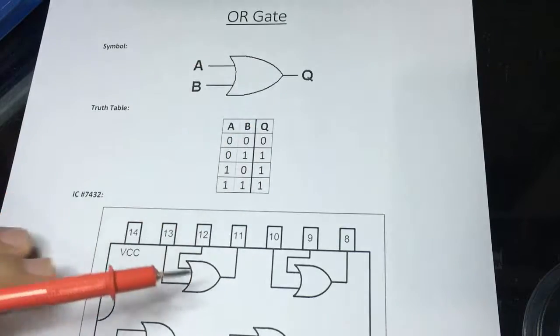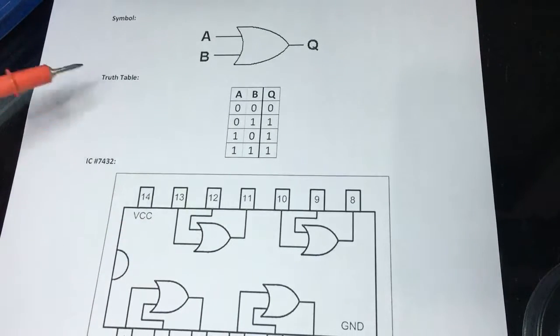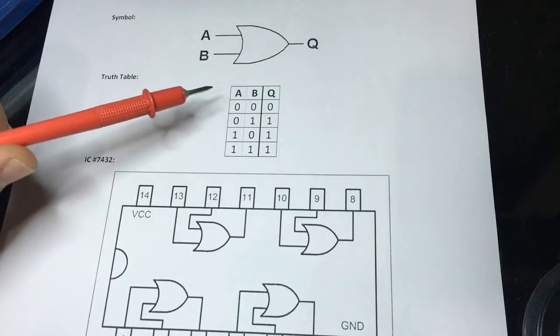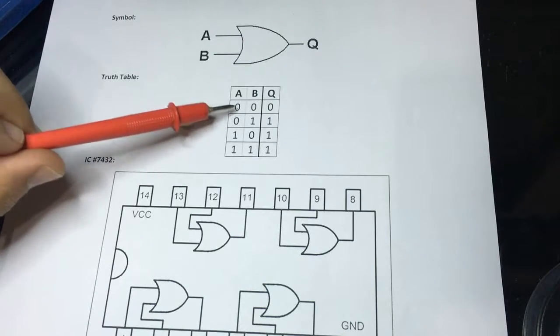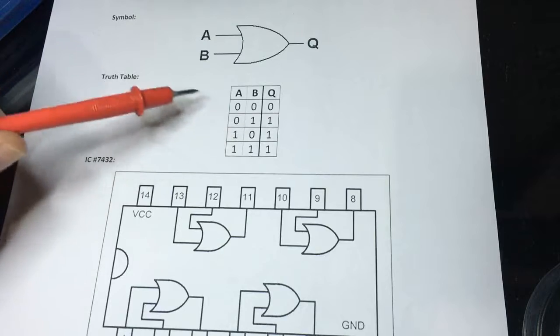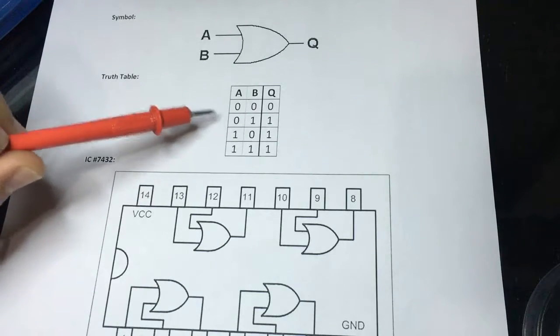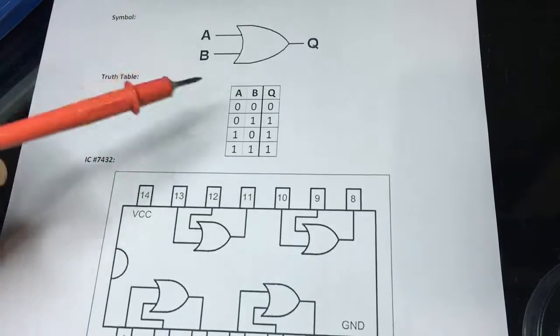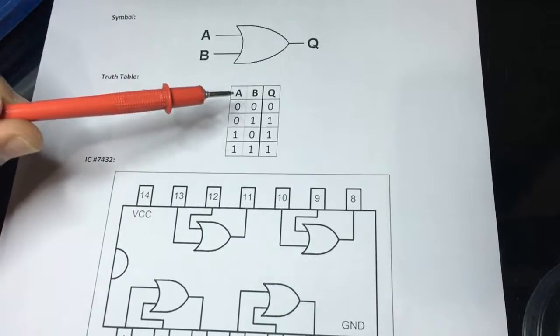And this is the truth table for the OR gate. So if any one of the inputs is logic high, the output is also logic high. The only case that the output is logic low is if all of the inputs are logic low.